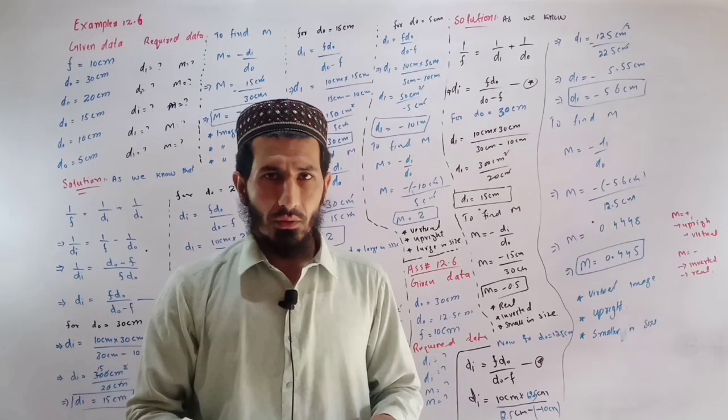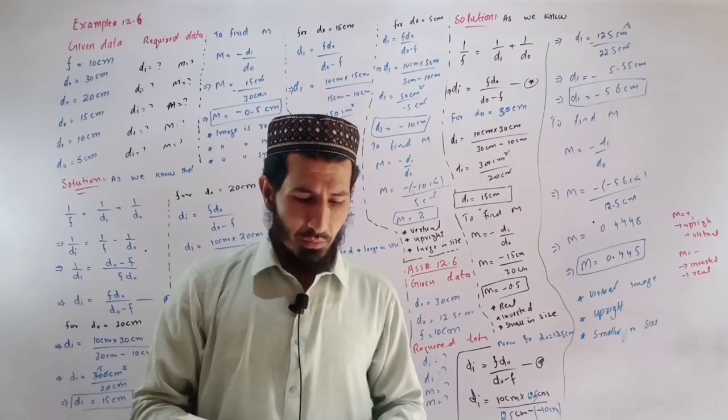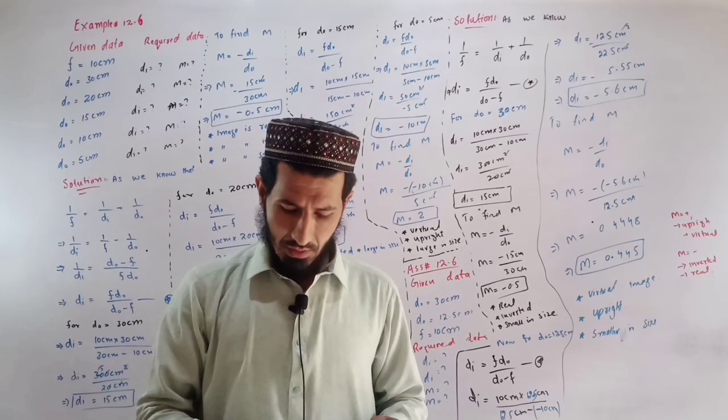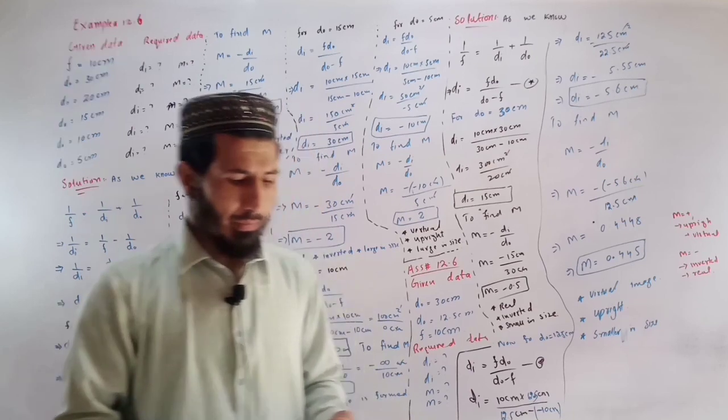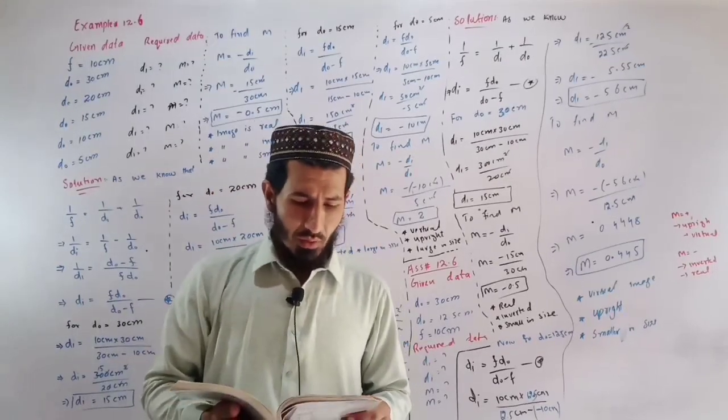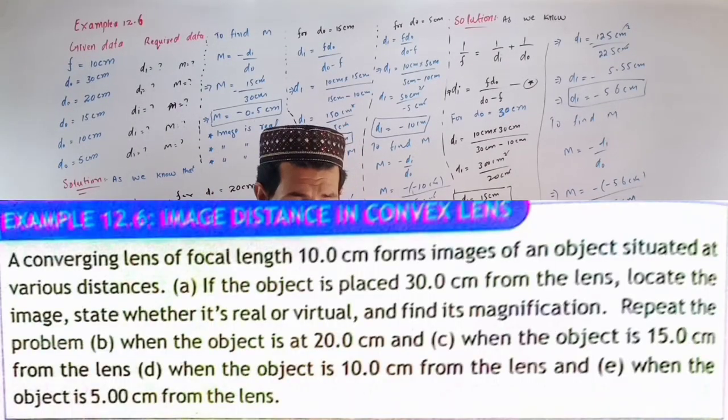In the lecture of the Magsara, for example 12.6, assignment 12.6. Example 12.6: a converging lens of focal length.